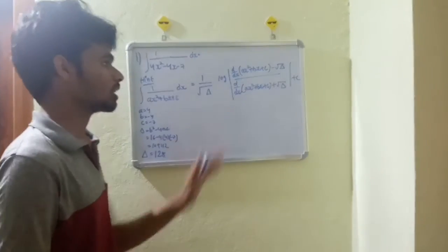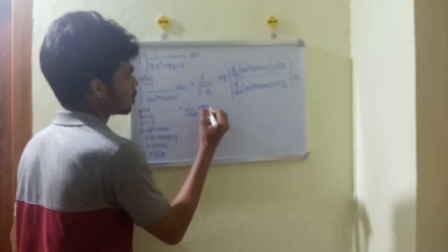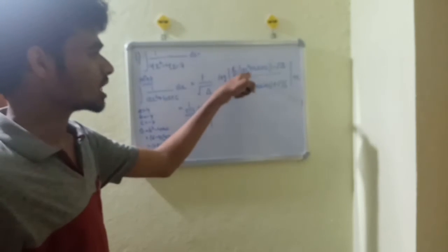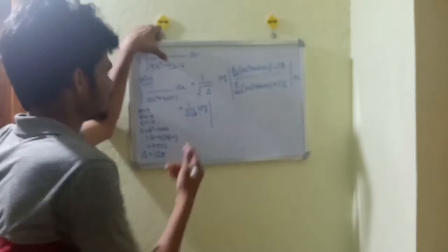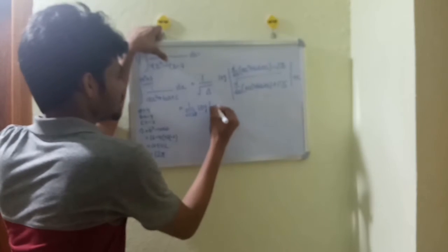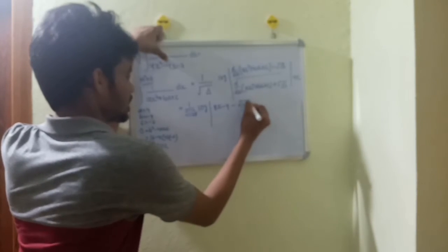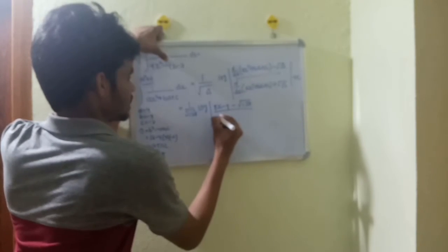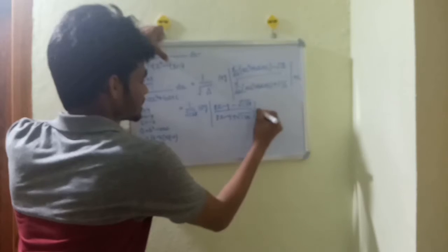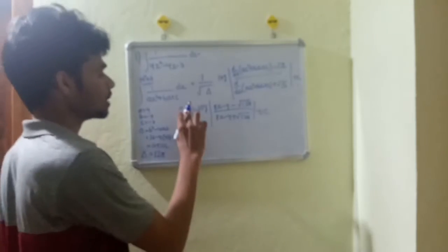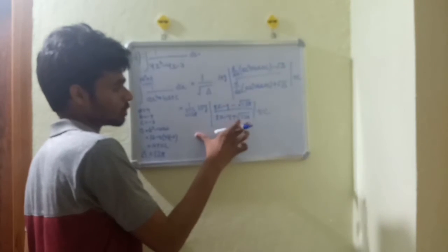Substitute delta value in the above equation. Differentiating ax² + bx + c with respect to x gives 8x minus 4. So the answer is 1 by root(128) log of (8x minus 4 minus root(128)) by (8x minus 4 plus root(128)) plus c. This is the required equation.